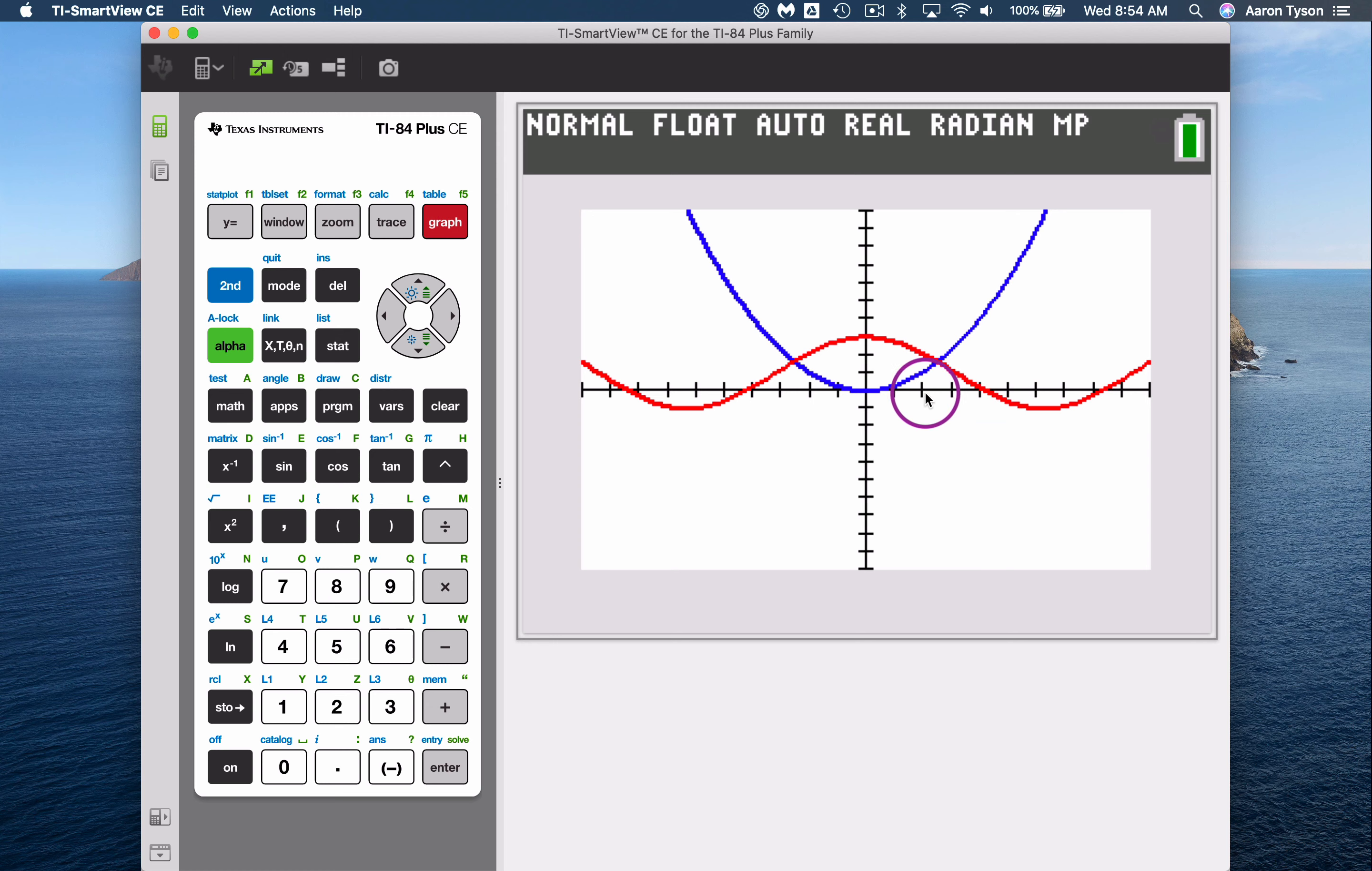So it looks like they intersect roughly at about two and a half comma two somewhere over here and negative two and a half comma two. But I have a feeling it's not going to be exactly those points.